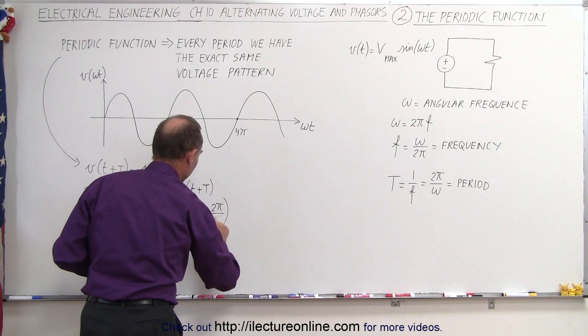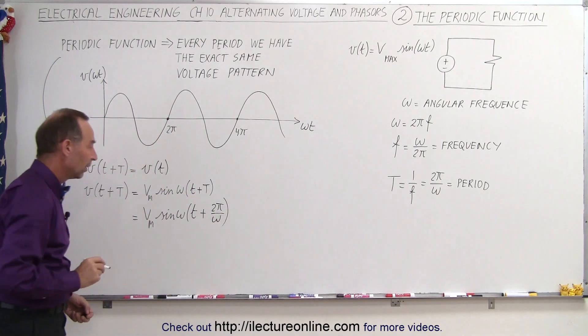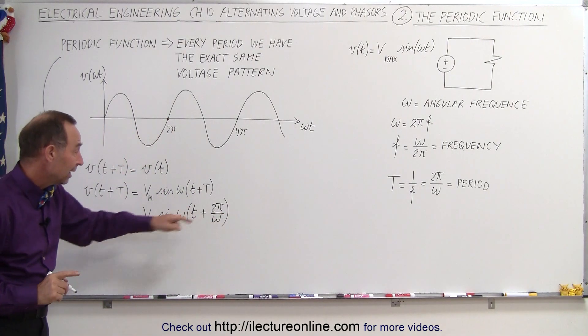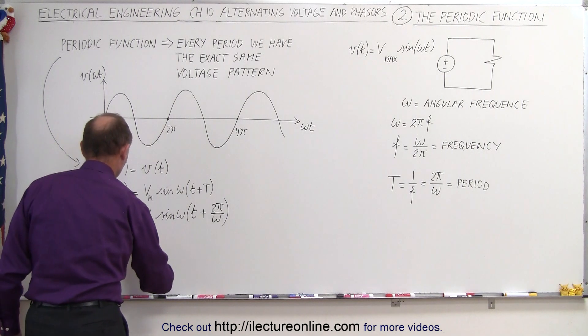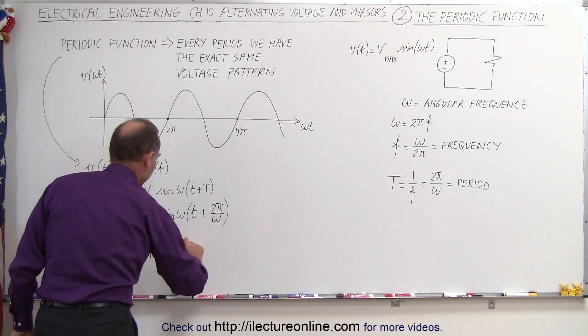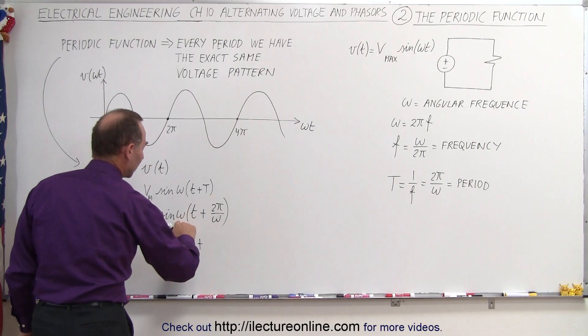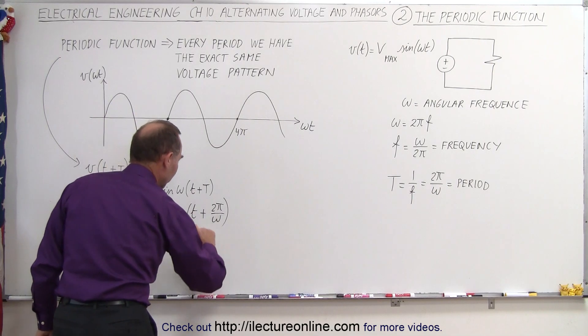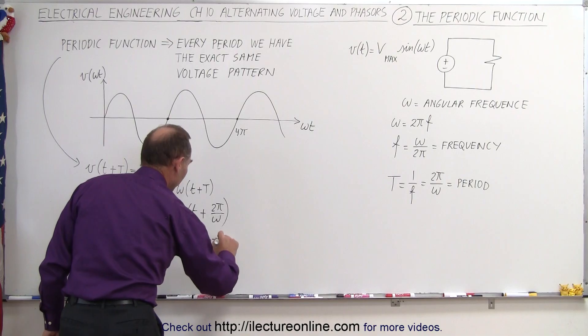And that should look like an omega. There, that's better. So now we're going to multiply the omega inside the parentheses. So this becomes V_max times the sine of ωt plus, and then if I multiply this times this, then the omegas cancel out. That would be 2π.